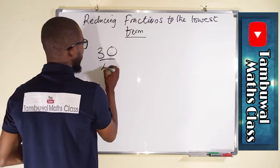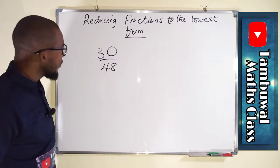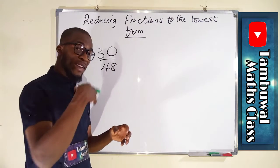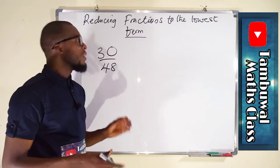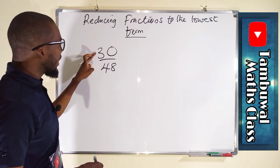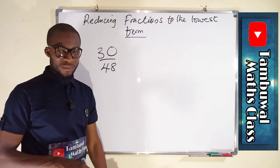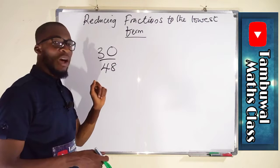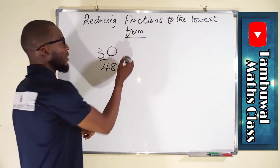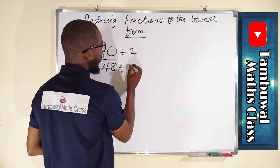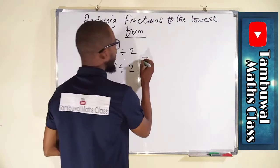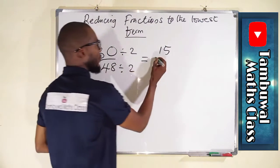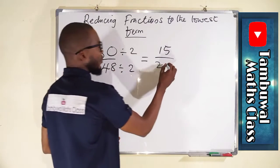Now let us take another fraction: 30 divided by 48. To reduce any fraction to its lowest term, you have to divide simultaneously. Since 30 and 48 are both even numbers, we can divide them by 2. Dividing 30 by 2 gives 15, and dividing 48 by 2: 2 goes into 4 twice and into 8 four times, giving 24.